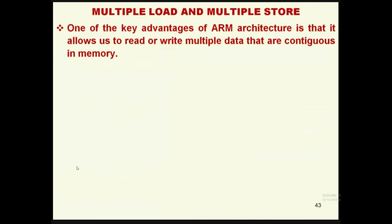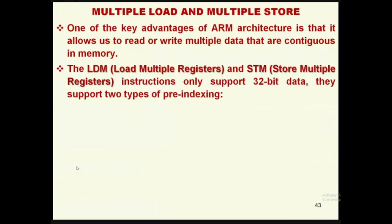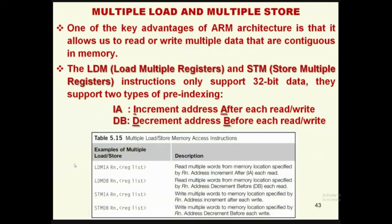One reason ARM processors are much faster is having multiple load and multiple store instructions. A key advantage of ARM architecture is that it allows reading or writing multiple data to contiguous main memory. LDM loads multiple registers and STM stores multiple registers. These two instructions support 32-bit data and support two types of addressing: increment after (IA) and decrement before (DB).